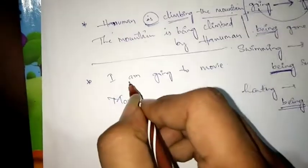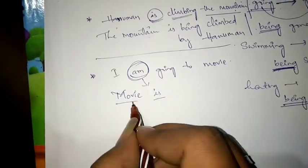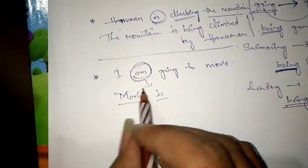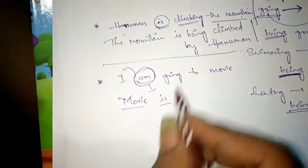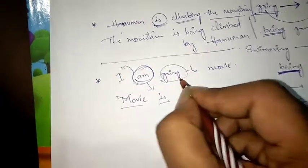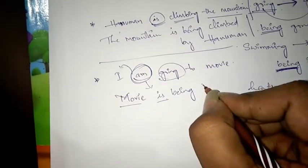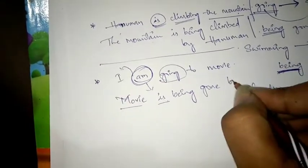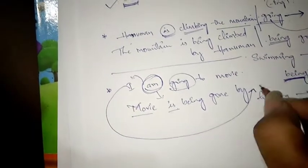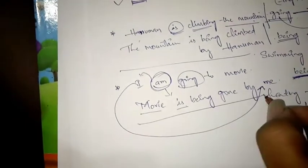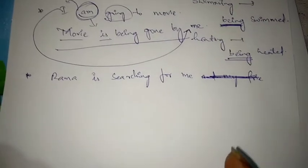'I am going to movie.' Movie is our object and it becomes the subject. 'Am' here changes to 'is' because 'am' is used only for 'I'. Converting V4 into V3 gives 'being gone'. Also, 'I' as subject changes to 'me' as object: 'Movie is being gone by me.'